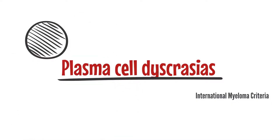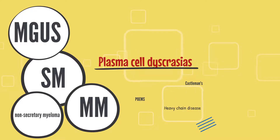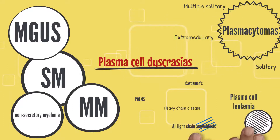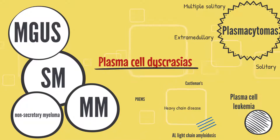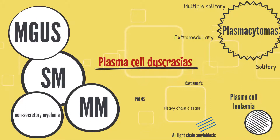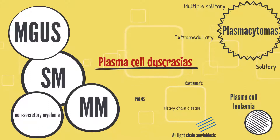In this video, we will discuss the various types of plasma cell disorders. Plasma cell disorders include myelomas, plasmacytomas, plasma cell leukemias, AL light-chain amyloidosis, heavy-chain disease, and rarer diseases like Castleman's disease and Cohn's syndrome. We are going to take a closer look at the different types of myeloma.